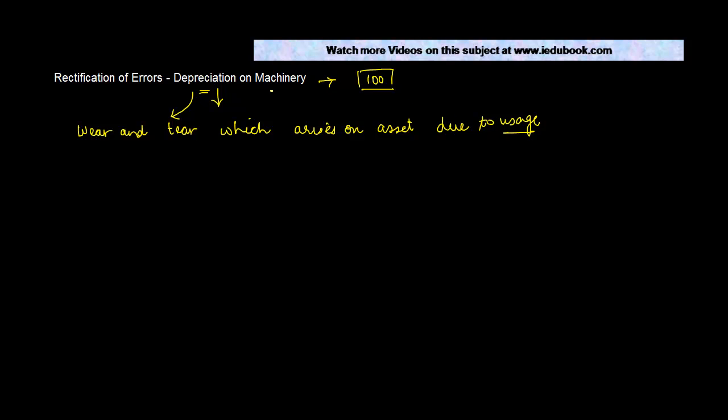So what happens is that when you use machinery - let's say for example you get a new machinery - as you keep on using it on a year-to-year basis, the machinery is going to go down in terms of its use. So in order to capture this downside which is there in terms of the machinery, what we do is we reduce the value of the machinery by providing depreciation.